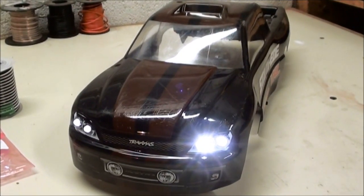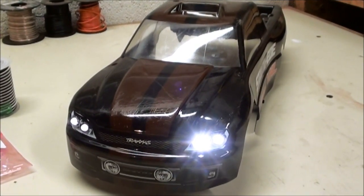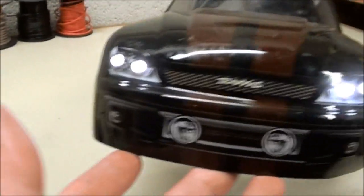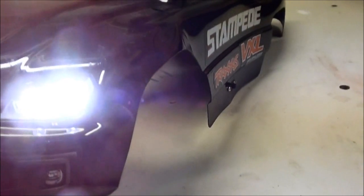Today I'm going to be showing you my method on making an LED light kit for your RC, just like the one I have installed on my Traxxas Stampede. It has four headlights and an on and off switch on the side.